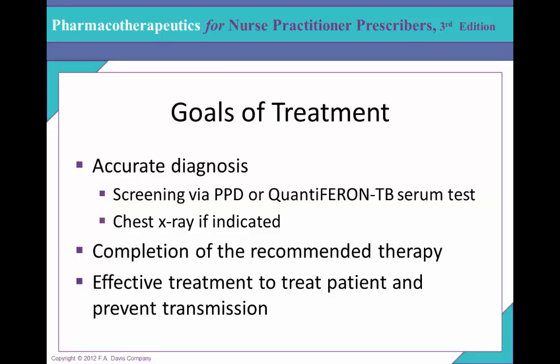Less often, the primary focus progresses immediately, causing acute illness with pneumonia, sometimes with cavitary pneumonia, pleural effusion, or marked mediastinal or hilar lymphadenopathy. If you tap the effusion, the pleural effusion is more lymphocytic in nature — it is not mediated by neutrophils. Patients can also develop extra-pulmonary TB, meaning involvement of sites beyond the lungs.